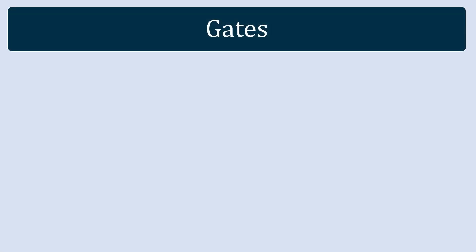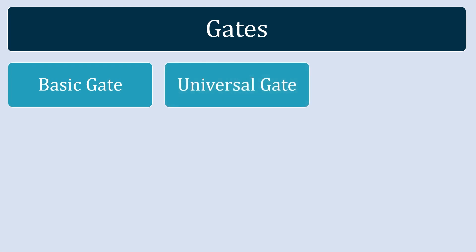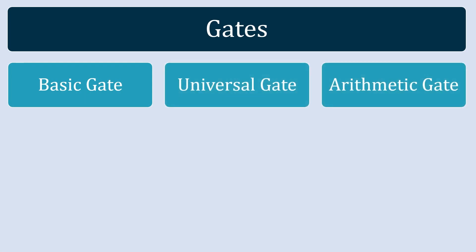First we will see the classification of logic gates by functionality. As per the functionality, the logic gates are classified under three categories: the first is known as basic gates, then universal gates, and then arithmetic gates.